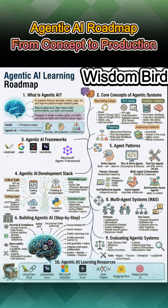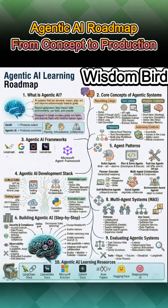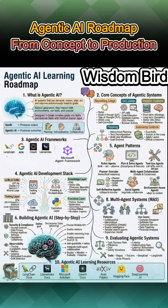First, what is agentic AI? These are AI systems that can perceive, reason, plan, act, and improve autonomously toward goals. Think beyond chat. These agents interact with environments, use tools, and execute workflows with minimal human input. The difference is simple: Gen AI produces output. Agentic AI produces outcomes. It breaks complex goals into tasks and executes them step by step.